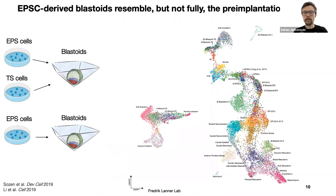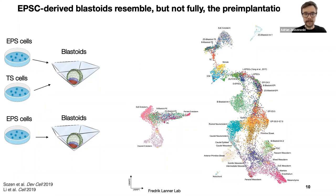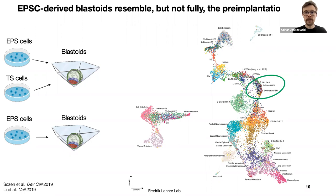Third, totipotent stem cells should have the ability to give rise to the entire embryo with all of its three lineages. Recently, EPS cells were shown to have the capacity to generate blastoids, either in combination with trophoblast stem cells, or even using only EPS cells. This suggests that EPS cells might be truly totipotent. To test that, we generated a large single-cell gene expression atlas spanning both pre-implantation stages of mouse embryo development as well as later post-implantation stages. We then projected EPS-derived blastoids onto this atlas to see how they compare to the real embryo. Overall, EPS blastoids to a large extent resemble real embryos, with both epiblast and primitive endoderm lineages very well recapitulated.